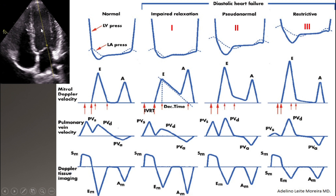Blood flow to the left ventricle slows, so the E-wave drops and it takes more time to fill completely, becoming wider — the deceleration time increases. With atrial contraction in early diastolic dysfunction, since not all blood has gone into the left ventricle, some blood remains at the end of early diastole. So at atrial contraction, blood flows faster into the left ventricle, causing A to be taller than usual.